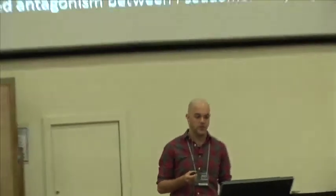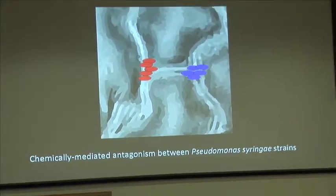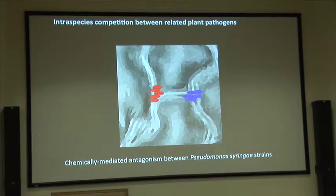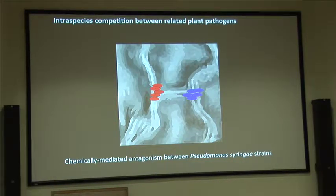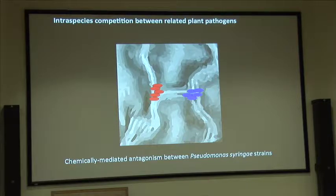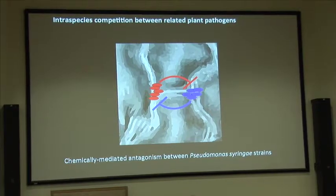I found myself in this field through a circuitous route. I was actually starting to look at intraspecies competition between Pseudomonas syringae strains, because we know there's a lot of competition in the phylosphere for locations and nutrients. I was looking to find some chemically mediated antagonism between different strains we'd isolated—basically strains that are competing for niche space.